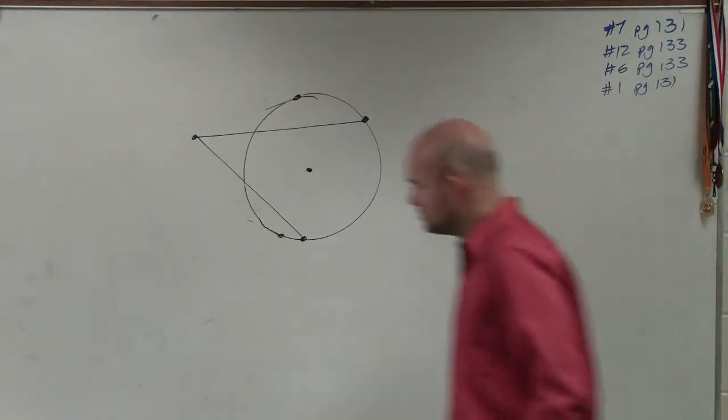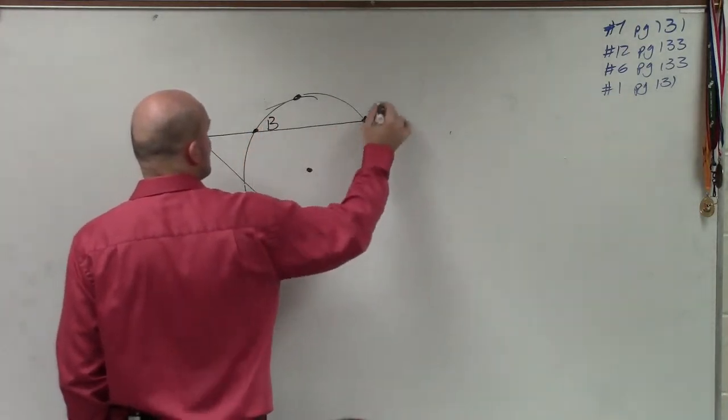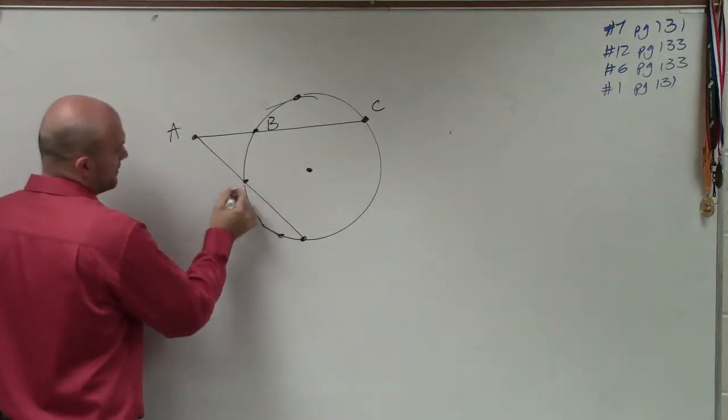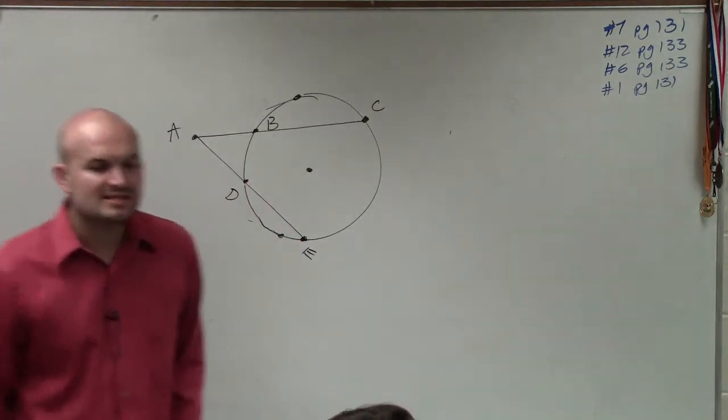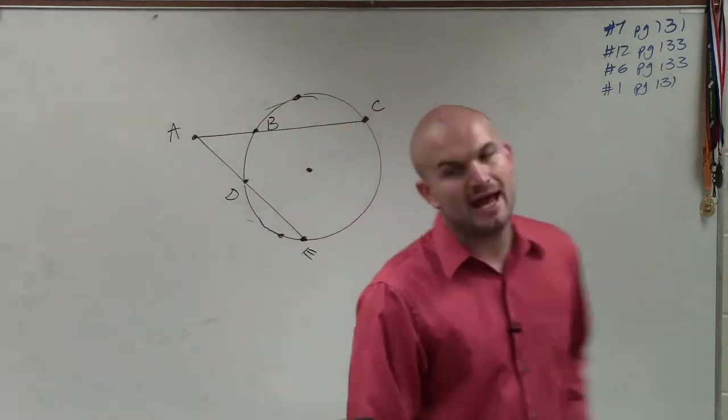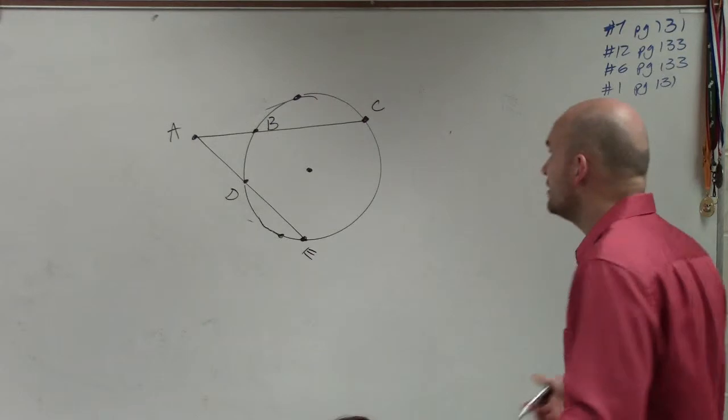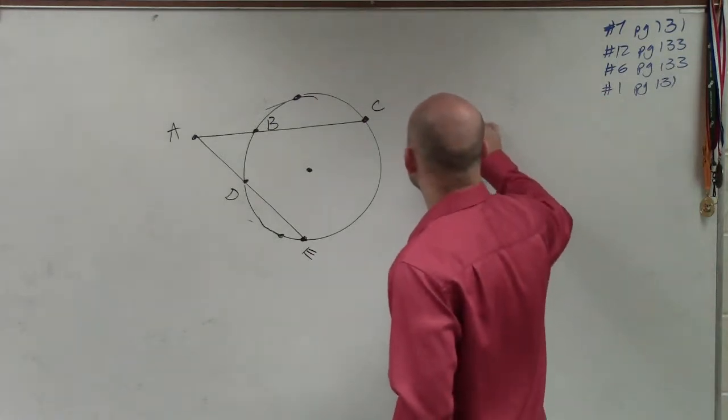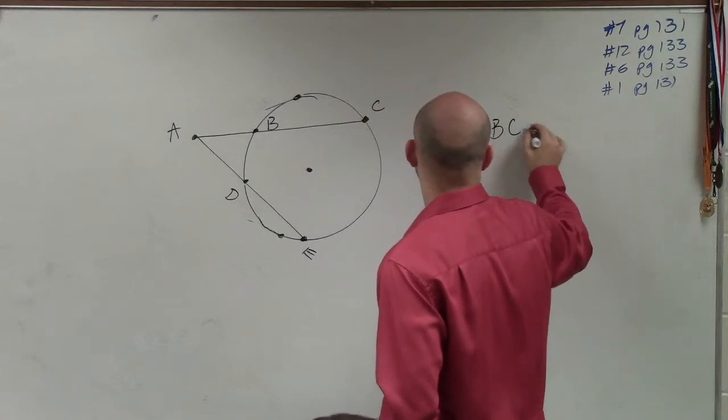So let's go ahead and call these points. Let's call this A, B, C, D, E. It's very similar, ladies and gentlemen, to when we had two chords interior, like we just did. Guess what? The product of these is also equal to one another.